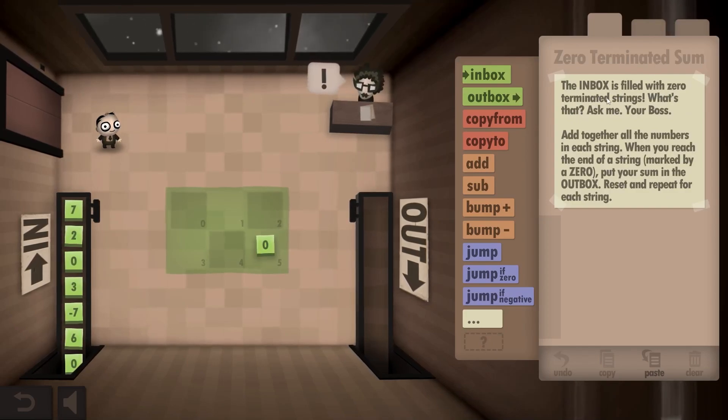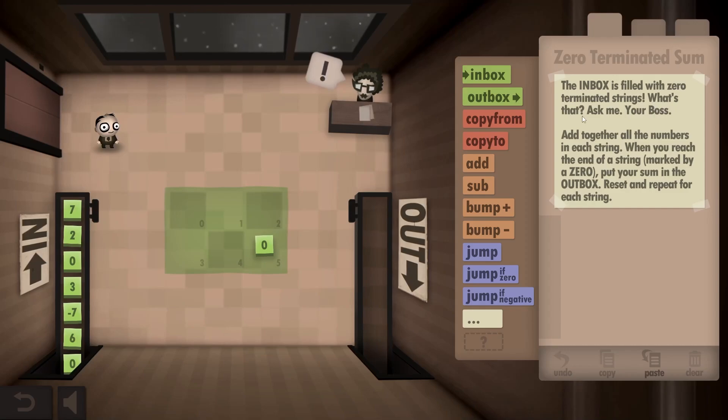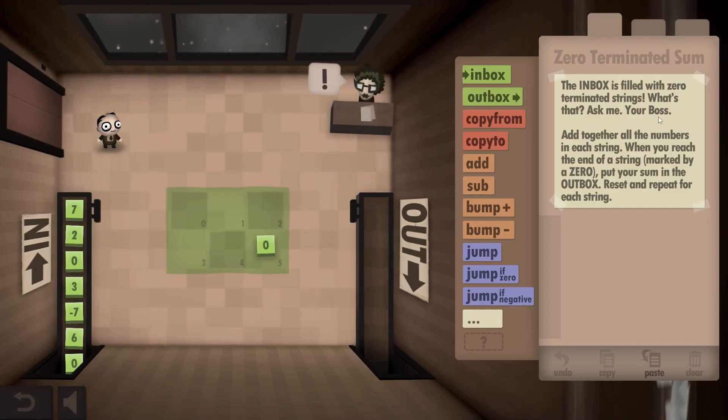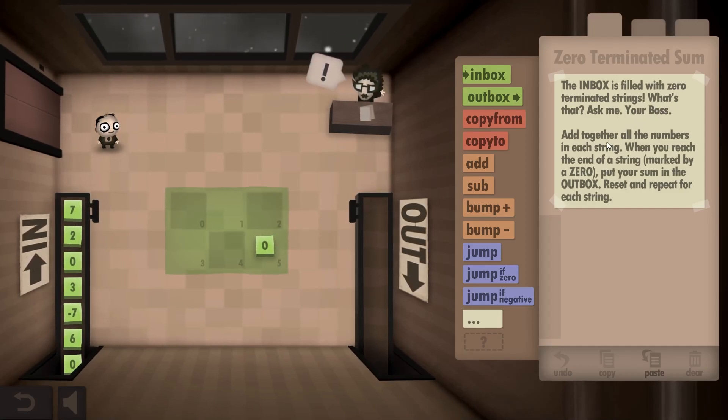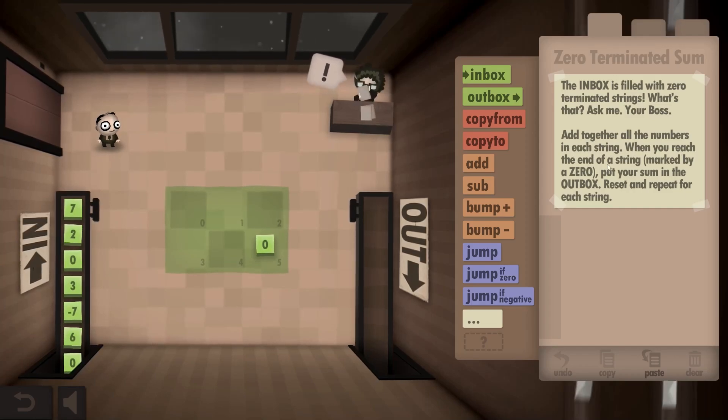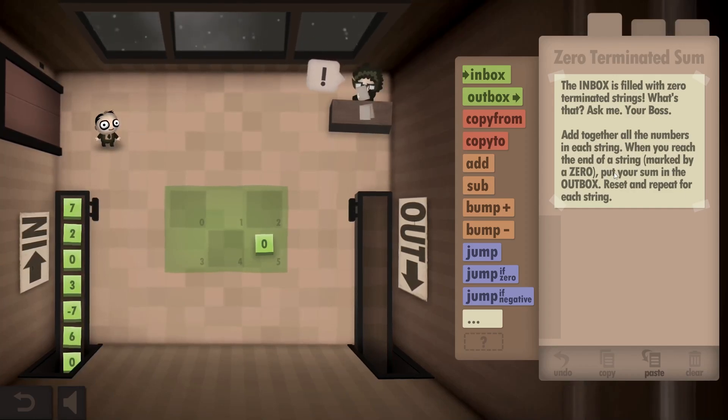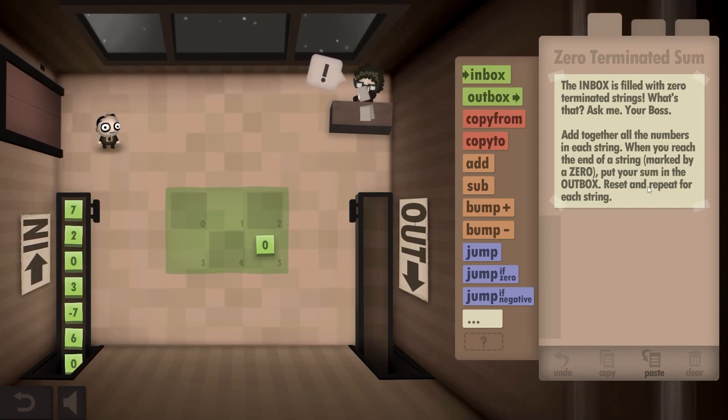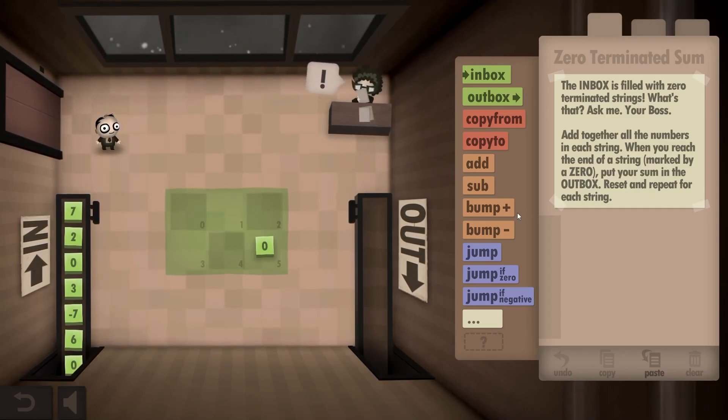The inbox is filled with zero terminated strings. What's that? Ask me, your boss. Oh, shut up, you. Add together all the numbers in each string. When you reach the end of the string, marked by a zero, put your sum in the outbox. Reset and repeat for each string.